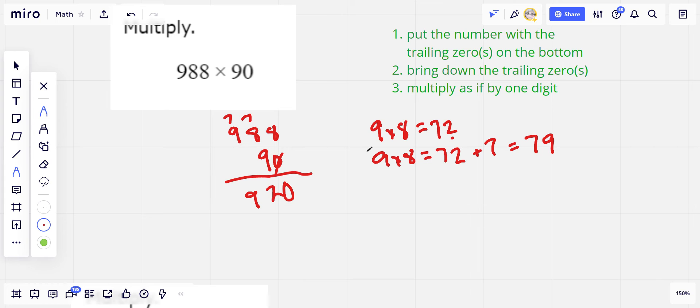And then we have 9 times 9 going to the hundreds column there. So 9 times 9 that equals 81. And then we're adding that 7 that we carried. So that's 88. And we've got 88,920.